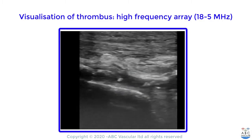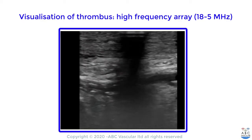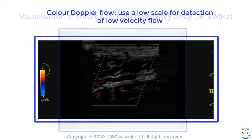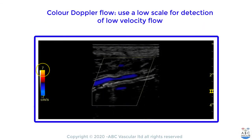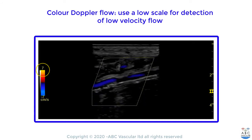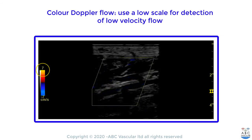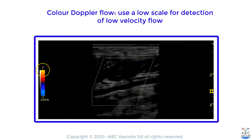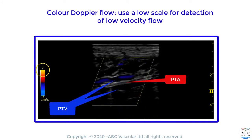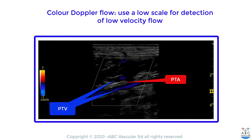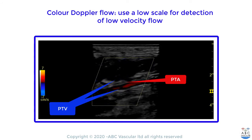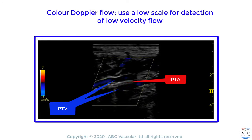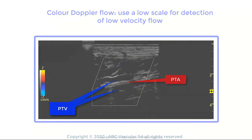In order to confirm the presence of an occlusion, we can use color Doppler flow. We must use a very low color flow scale, as represented in this video, in order to detect any low velocities. As shown in this video, while there is color Doppler flow filling the satellite posterior tibial veins, there is no color Doppler flow within the posterior tibial artery, confirming the presence of an arterial occlusion.